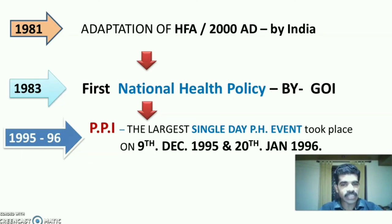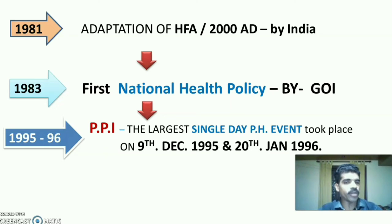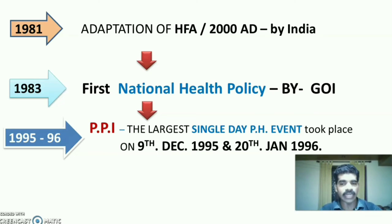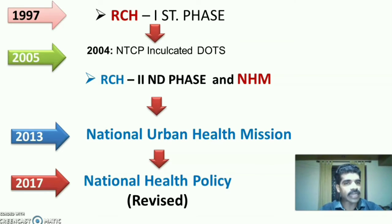In 1983, the Government of India started the first National Health Policy. During 1995–1996, the largest single-day public health event — Pulse Polio Immunization — started on 9th December 1995 and 20th January 1996. During 1997, the Reproductive and Child Health (RCH) Services first phase started.